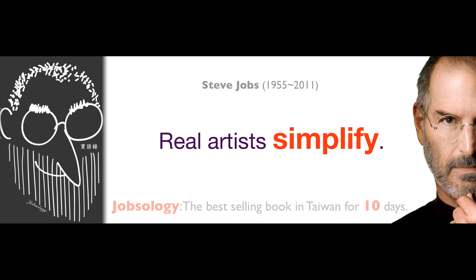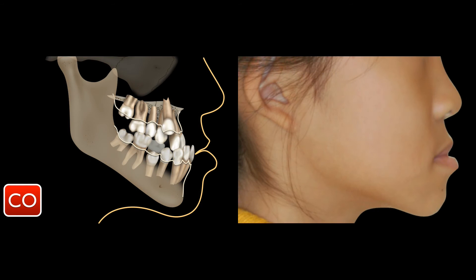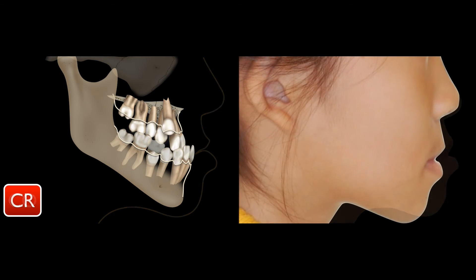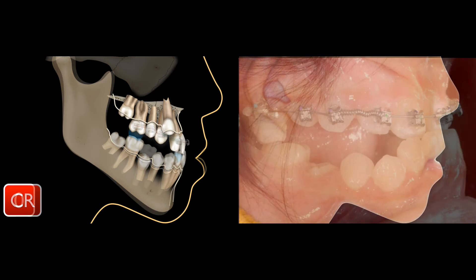Can you believe it? A dentist became a best-selling author. Do I get more respect from you? If you can answer my question, I will give you a complimentary copy. So let me simplify this treatment plan with Dr. Ronson's drawing. First, the CO profile is assessed. Look at the CO profile — if the patient has a functional shift, then with bi-turbo and open coil spring, you'll be able to create a space.